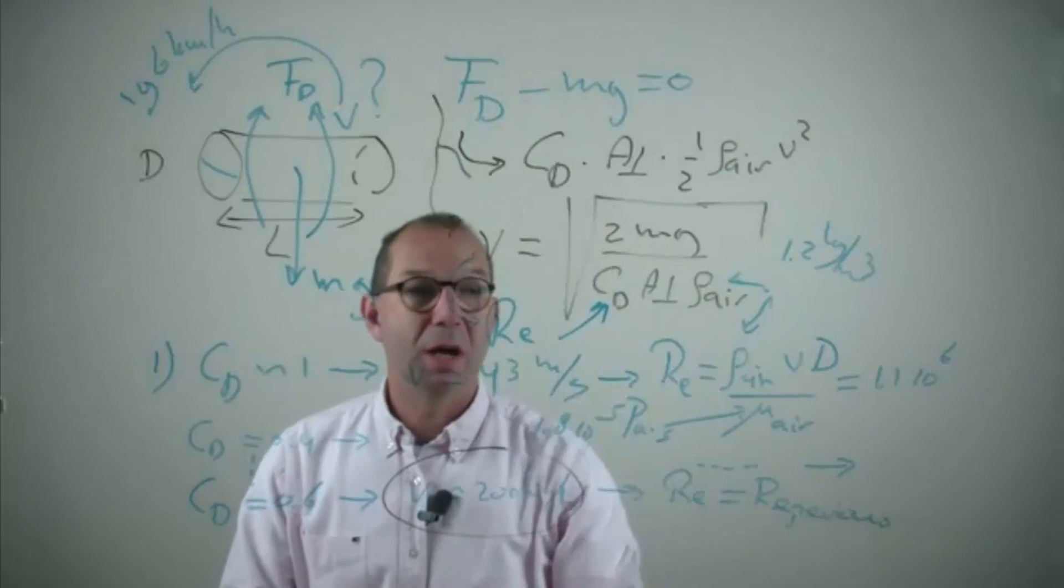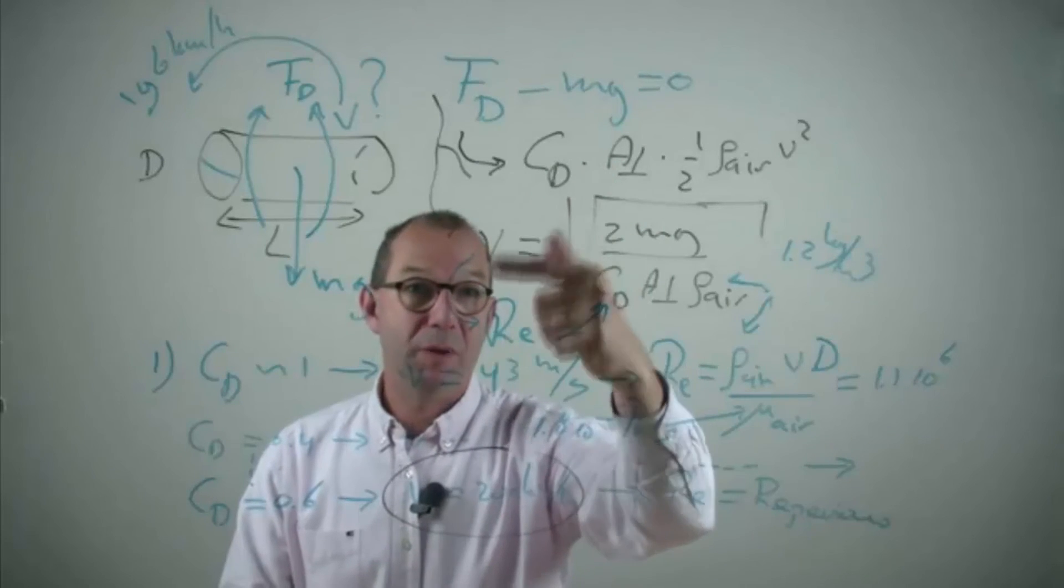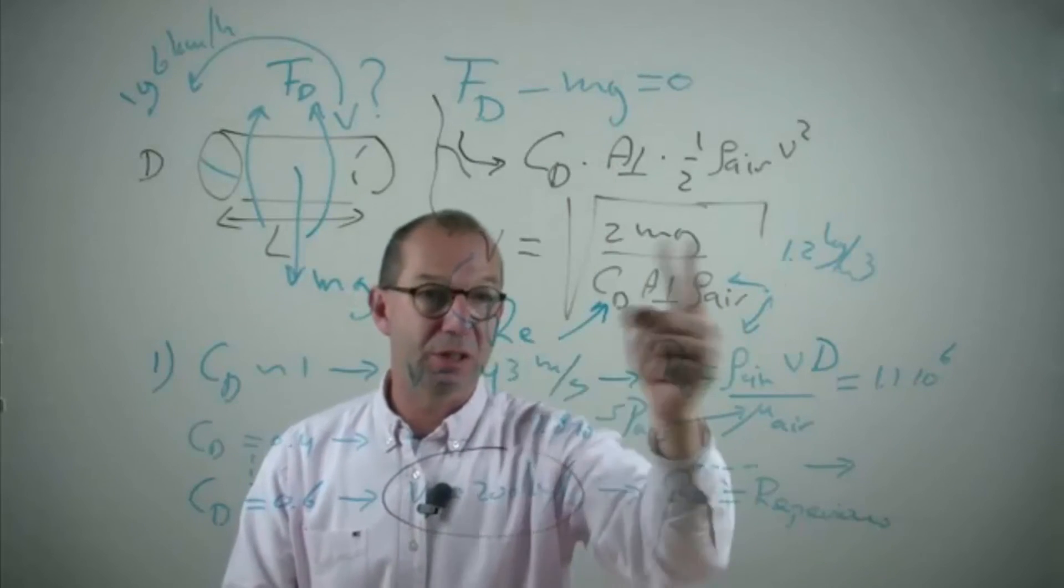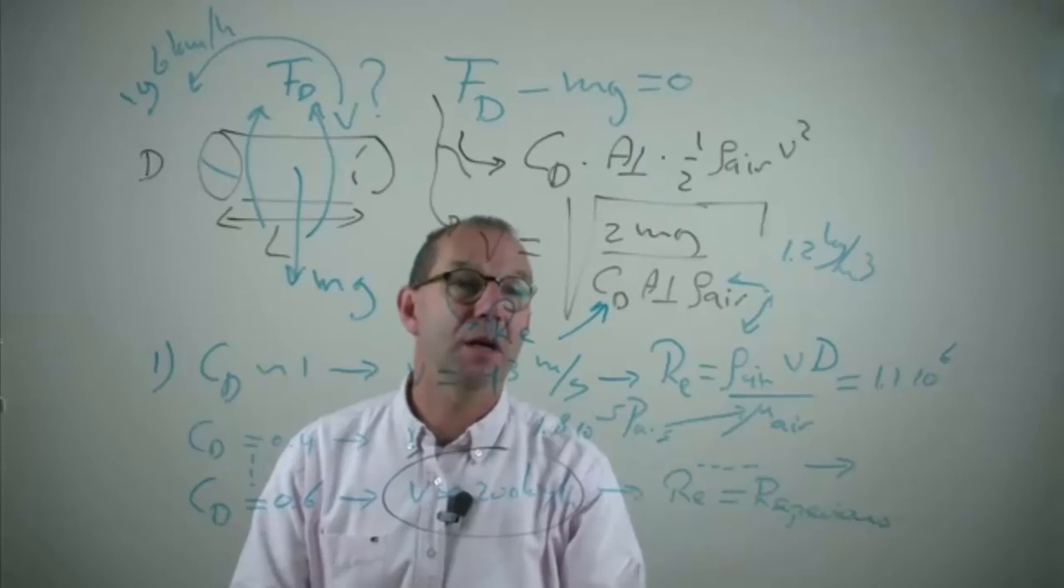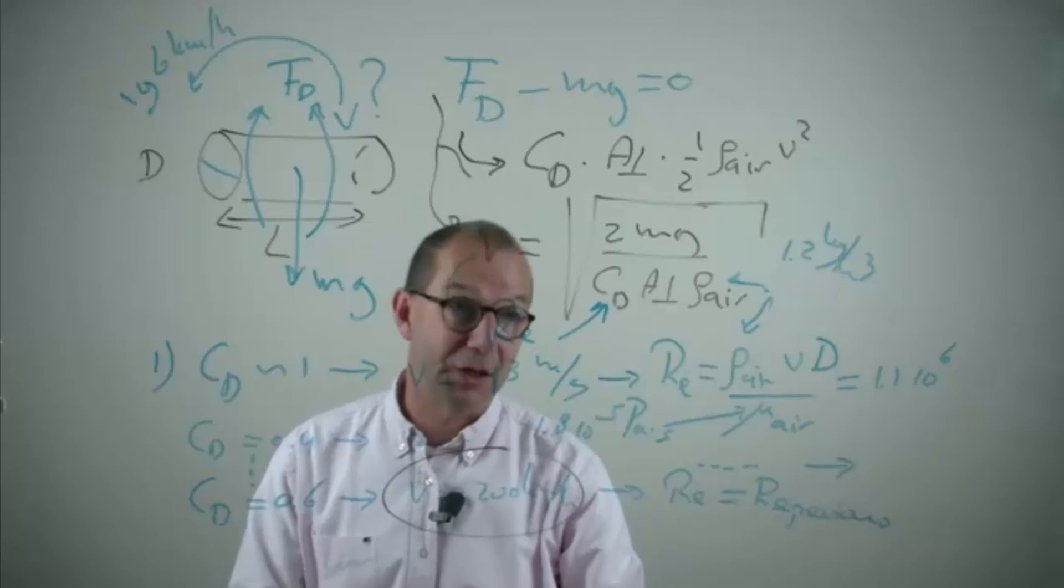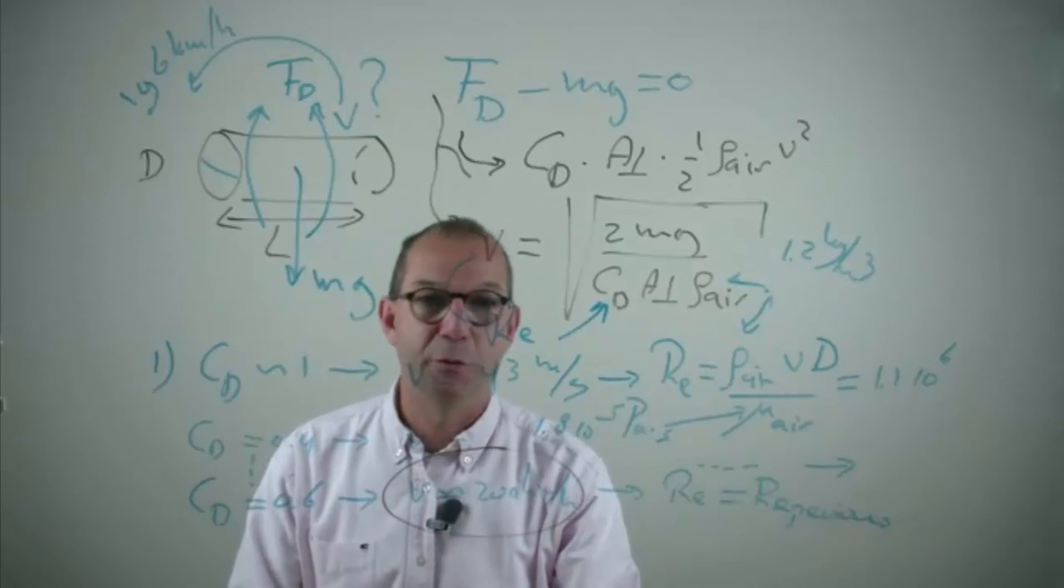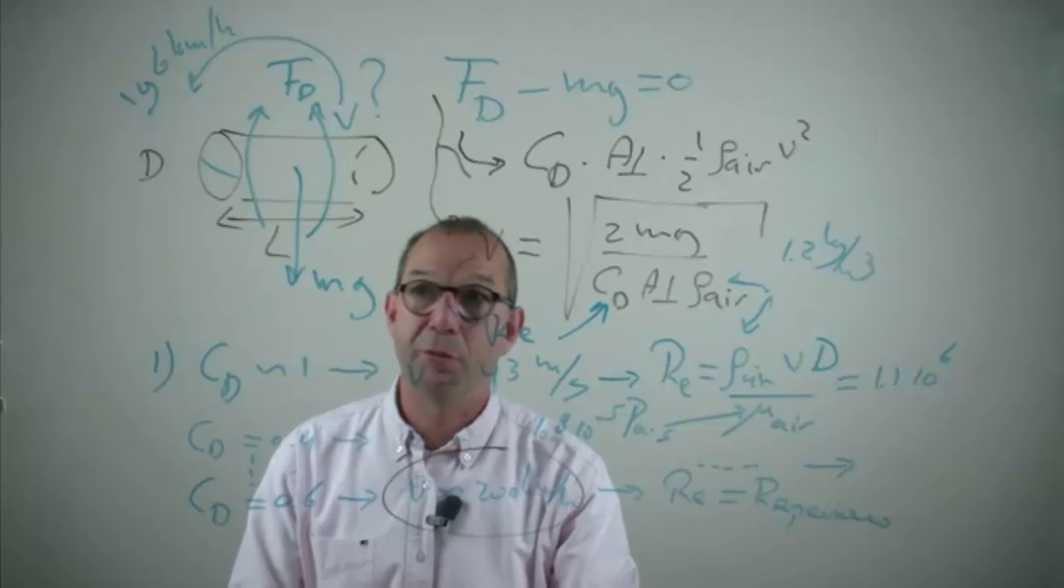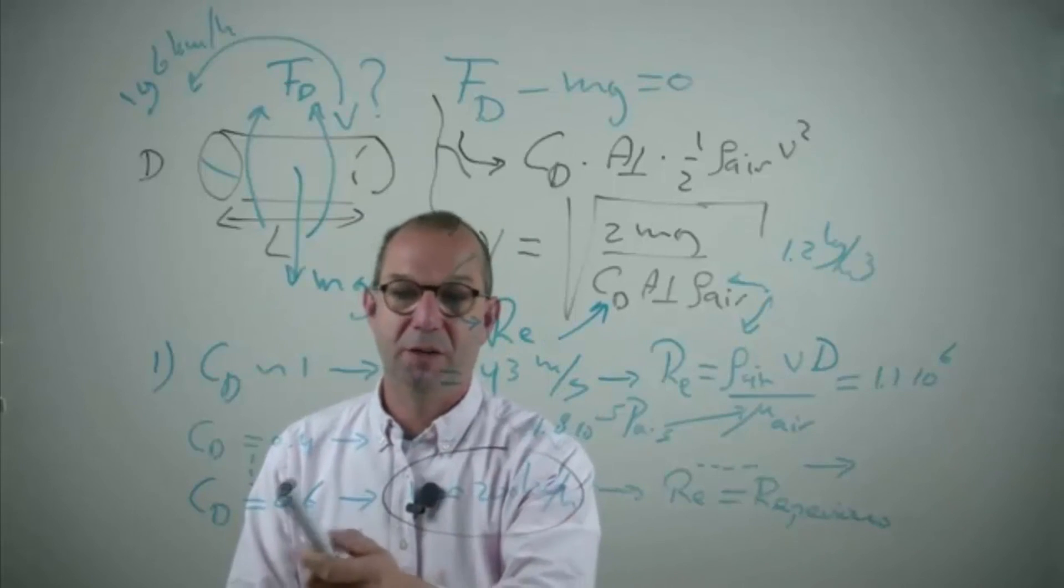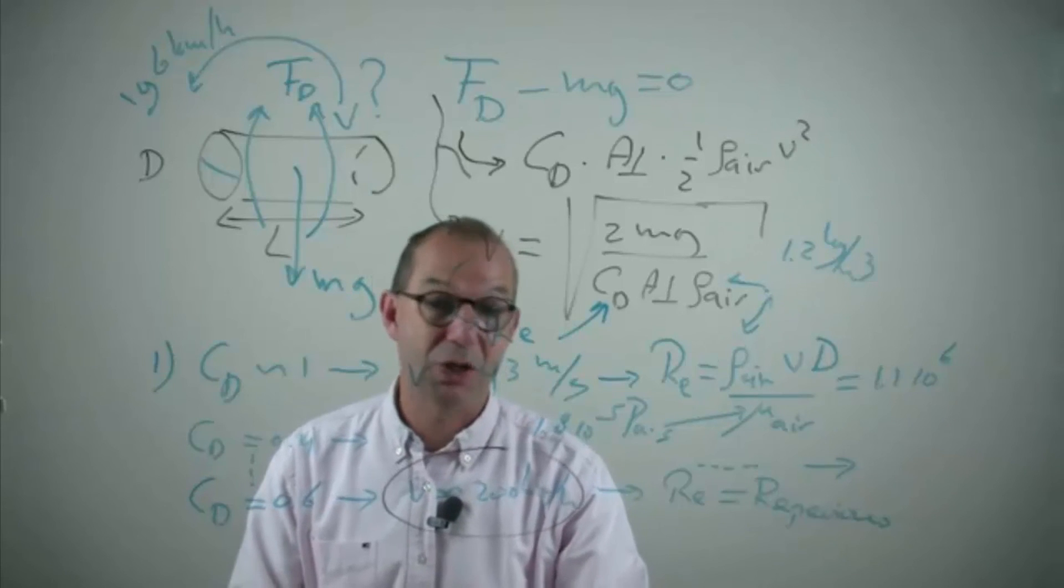Once we have understood how to model this, gravity balances drag force. We back out the velocity, see that we need an iterative scheme as we have two unknowns or one unknown function additionally. We start iterating with the known CD versus Reynolds number graph for a cylinder. Keep on iterating until you find the same Reynolds number or the same CD twice and you're done.